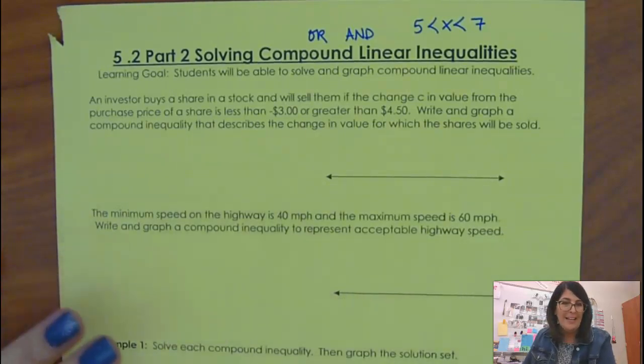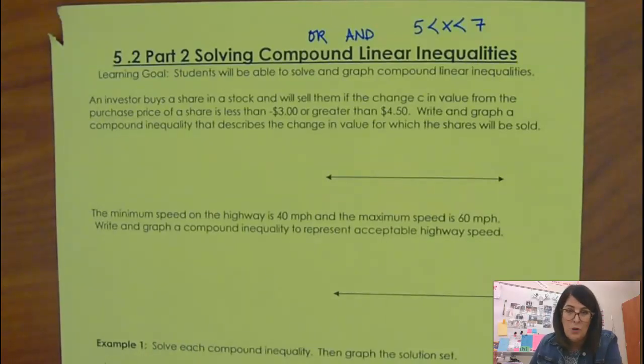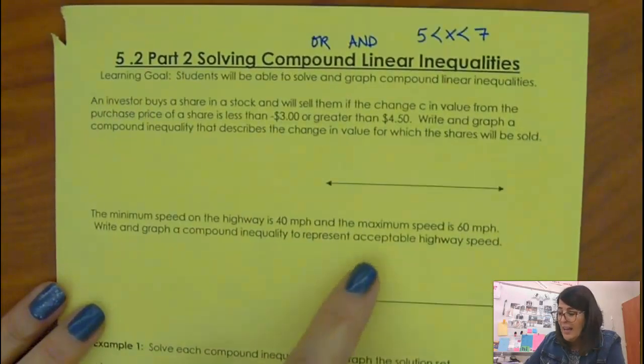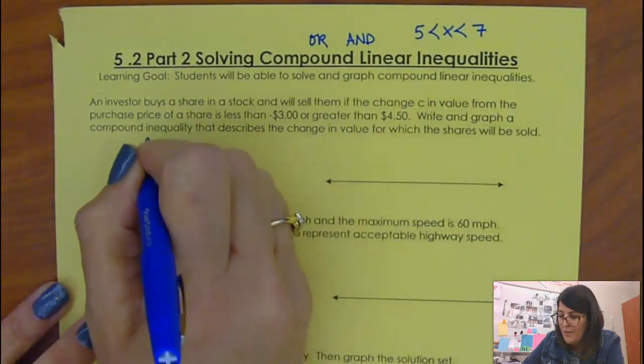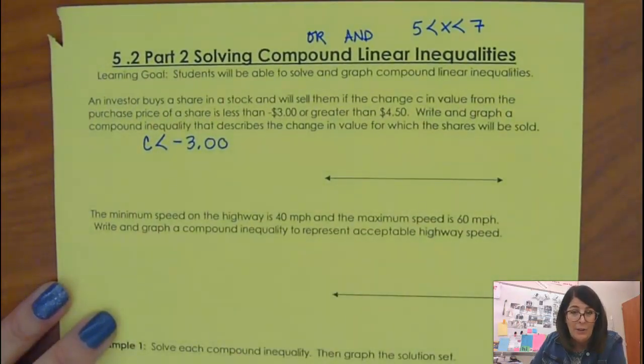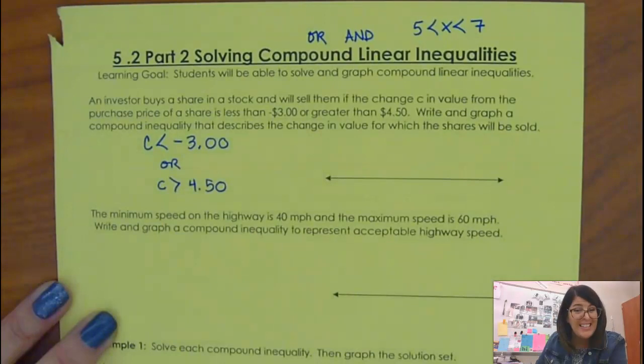So here's a couple applications of where you might use an OR. If you are an investor purchasing stock, sometimes your value of your stock could go way up, and you might want to sell that so that you can make the profit. And sometimes if you have stock, the value could go way down. Things could lose money, and at some point you want to just cut your losses and not have that stock anymore, and at least cover maybe a little bit of it. So if you're an investor and you're going to say, hey, if the changing value is less than $3, so if that price goes down more than $3, or if it is greater than $4.50, then you're going to sell it, because you can make all that money.